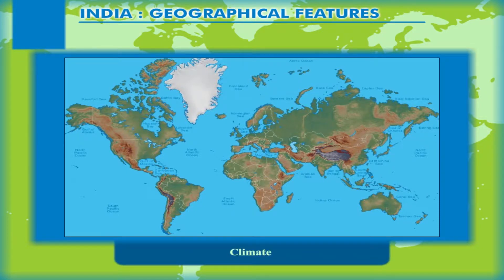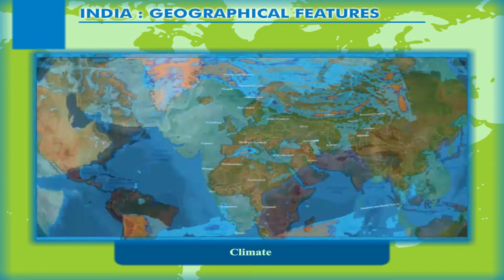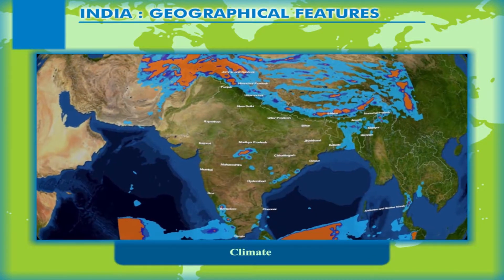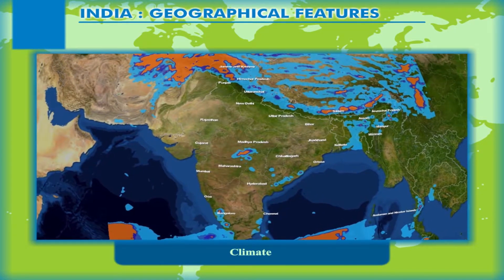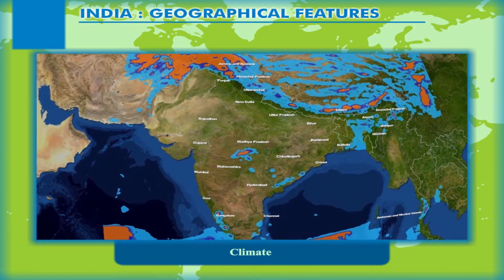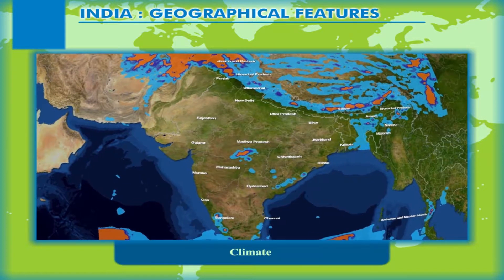Climate. The climatic conditions of any place are decided by its location and the physical landscape, and India is no exception. The climatic conditions all over the country are quite diverse.